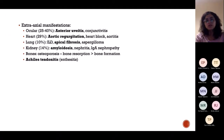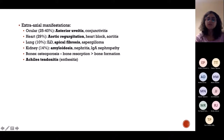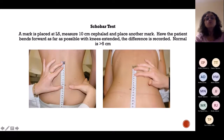A useful mnemonic: the extra-articular manifestations of Ankylosing spondylitis mostly begin with A. Ocular: anterior uveitis and conjunctivitis. Heart: aortic regurgitation and aortitis. Lung: apical fibrosis. Kidney: amyloidosis. And Achilles tendonitis.